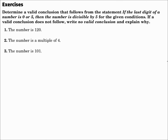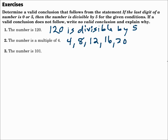Determine a valid conclusion that follows from the statement: if the last digit of a number is zero or five, then the number is divisible by five. Number one: the number is 120. Well, 120 ends in zero, which means 120 is divisible by five. Number two: the number is a multiple of four. That doesn't say anything about the number ending in zero or five. If you look at different multiples of four, some do not end in zero or five — twenty ends in zero, but not all of them. Because it doesn't always happen, there's no valid conclusion.